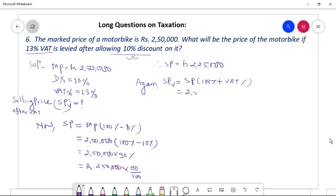So 2 lakhs 50... oh sorry, 25,000. 2 lakhs 25,000 times (100 percent plus 13 percent) equal to 2 lakhs 25,000 times 113 percent equal to 2 lakhs 25,000 times 113 by 100. Let me know what is the product of 2,25,000 times 113?